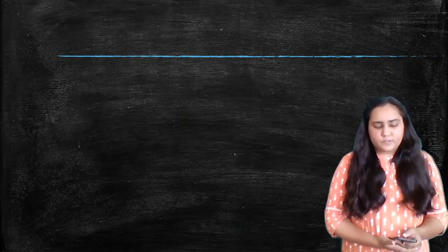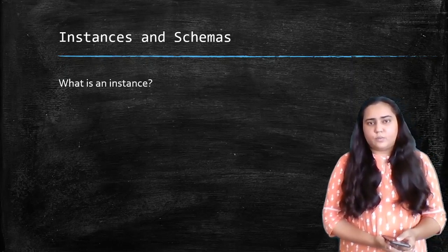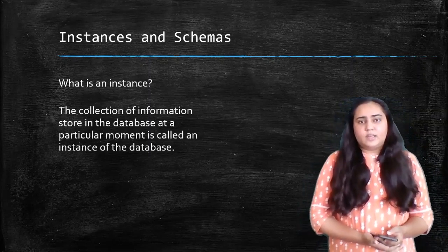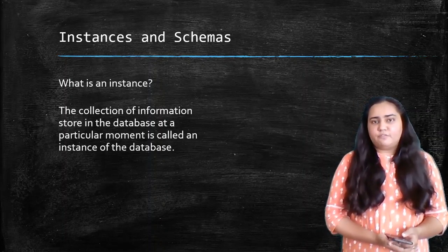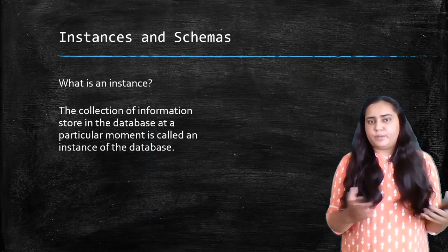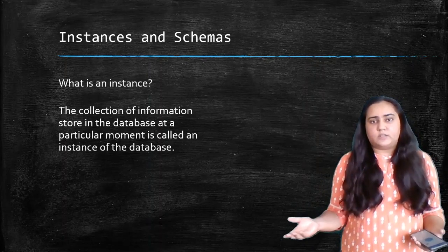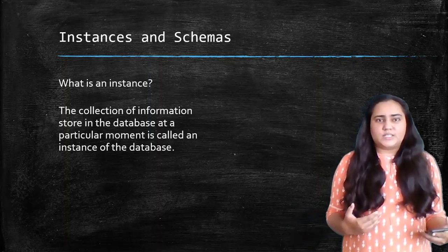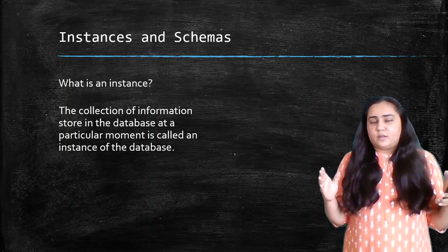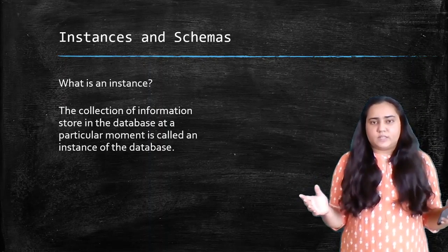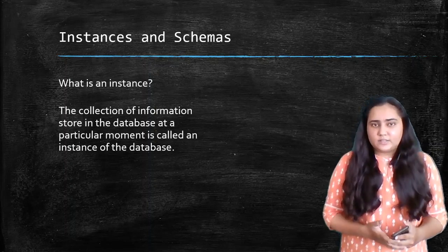Towards the end of this video, I'm going to talk about instances and schemas. An instance is a collection of information stored in the database at a particular moment. If I open my database and look at it right now, whatever I see is an instance of the database. You could consider it as a snapshot or photograph of your database — with all the data, tables, columns, and data types captured at that moment.